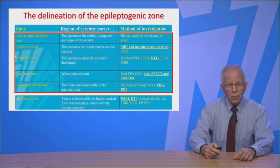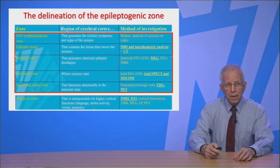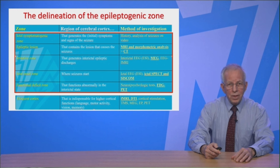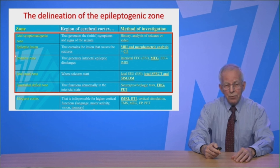This is from Luders and Rosenow's work describing the different zones. The ictal symptomatogenic zone is where the seizure starts on history or video EEG. The epileptic lesion is visible on MRI and sometimes CT. The irritative zone generates interictal spikes picked up on EEG and MEG. The ictal onset zone is where seizures start, often assessed with SPECT and CISCOM. The functional deficit zone is the region of cortex that functions abnormally between seizures, often assessed with FDG PET to look for regions of hypometabolism.